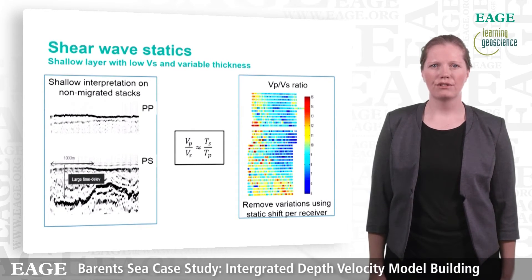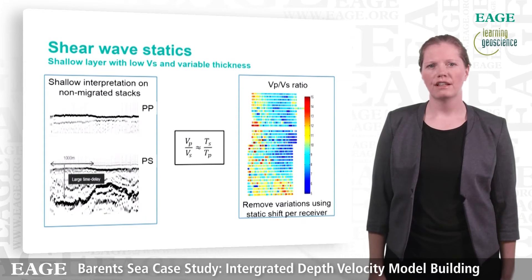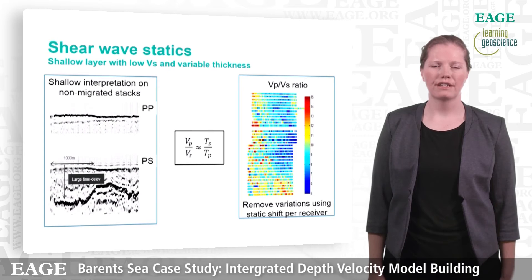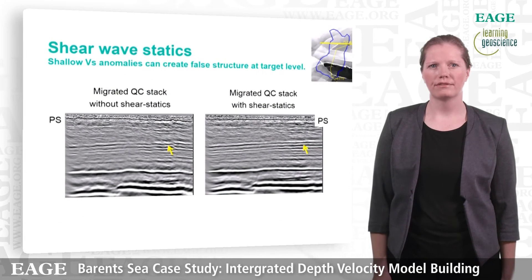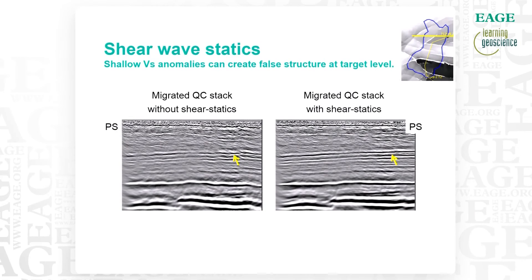This anomalous layer could not be built into the velocity model — neither the resolution needed in thickness nor the slow velocities. We know that the energy will travel very close to vertical, and it is therefore better to remove these variations using a static shift. The static shift applied is such that the velocity model would be smooth all the way up to the sea floor. The next slide shows the motivation for doing the shear wave statics. The only difference between the images is the application of the shear statics, and on the right hand side we clearly see more continuous and more geologically consistent events.